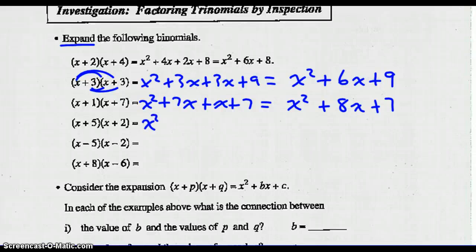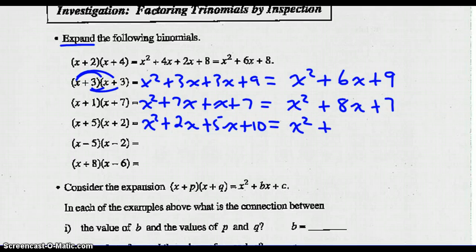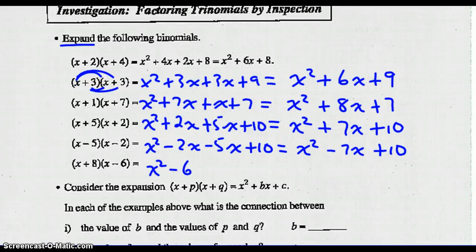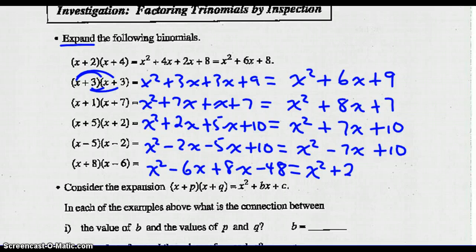The next one: x times x, x times 2, 5 times x, and 5 times 2. The middle terms are like, so 2x plus 5x is 7x. The next one: x times x, x times negative 2, negative 5 times x, and negative 5 times negative 2. Negative 2x minus 5x is negative 7x. The last one: x times x is x squared, x times negative 6, 8 times x, and 8 times negative 6. Negative 6x plus 8x is positive 2x. We get minus 48.